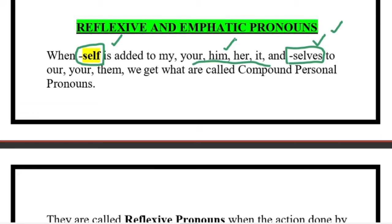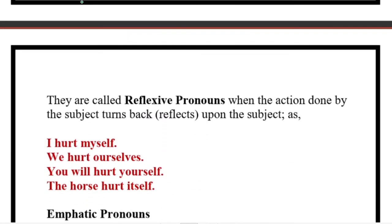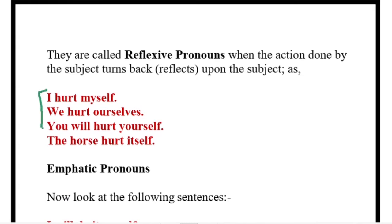How will you understand which one is reflexive and which one is emphatic? In both cases — reflexive or emphatic — you write words like myself, yourself, himself, themselves, itself. So how will you identify which is which? Look at these four sentences. 'I hurt myself' — when the word 'I' and 'myself' are written separately, not side by side, then it is a reflexive pronoun.